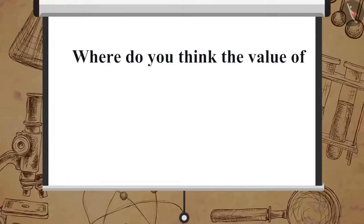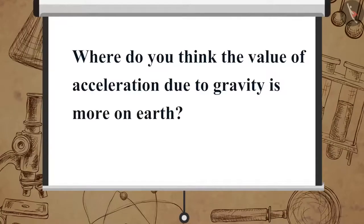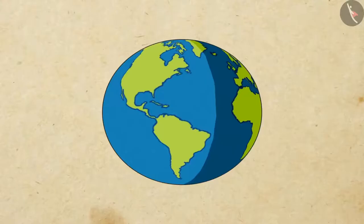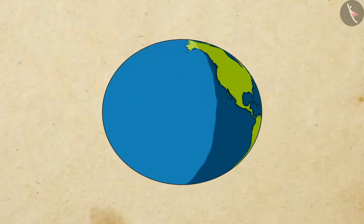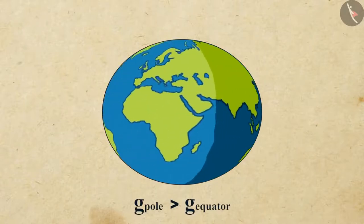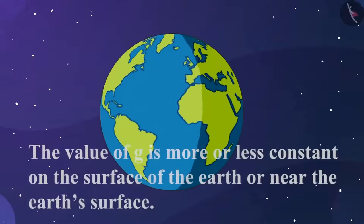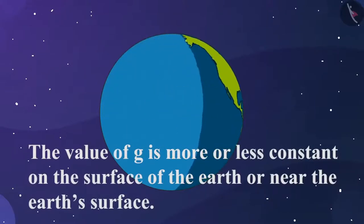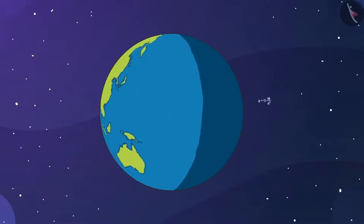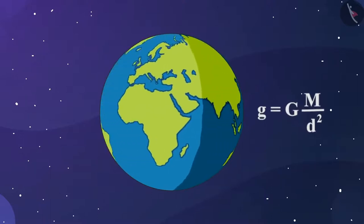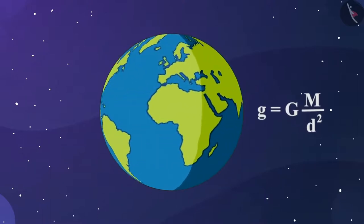The Earth is not a perfect sphere — the radius of the Earth increases from the poles to the equator. So where is the value of acceleration due to gravity more: at the poles or at the equator? The value of g is more at the poles than at the equator. The value of g is more or less constant on or near the surface of the Earth, but for objects far from the Earth, we calculate g using the formula g equals G·M divided by d square.